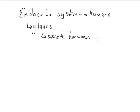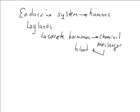These hormones are chemical messengers, and what these chemical messengers do is they are carried throughout the blood system, or what we call the circulatory system, and there they are going to act or cause changes on what we call target tissues and cells.